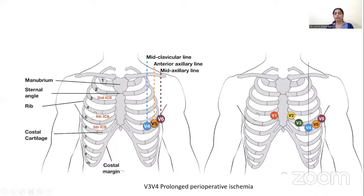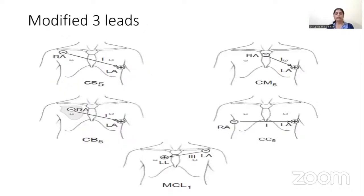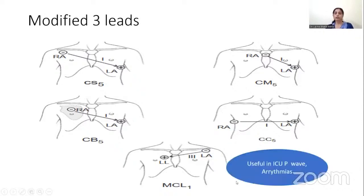Pre-cordial lead placement is crucial for monitoring ischemia. Studies show that mid pre-cordial leads V3 to V5 are most sensitive for detection of ischemia. Alternative lead systems provide additional information; for example, when lead V4 is placed on the right side in the mid-clavicular line in the 5th intercostal space, it provides information about right ventricular ischemia. When only 3 leads are available, the modified chest lead 1 (MCL1) is important — the positive electrode is placed at V1 position and the negative electrode below the left clavicle. This lead is especially useful in ICUs for observing P wave morphology and detecting arrhythmias.